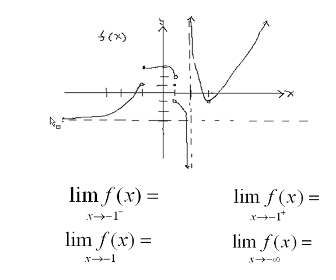We notice that it gets closer and closer to this horizontal asymptote, y equals negative 3. So the limit of f as x approaches negative infinity equals negative 3.